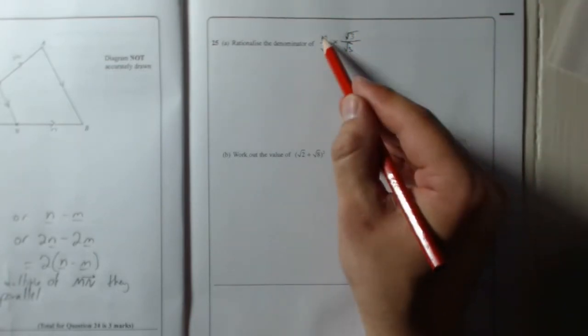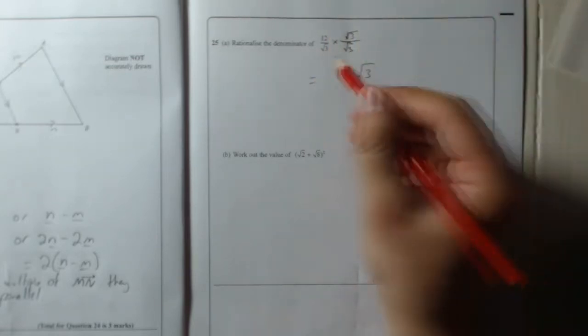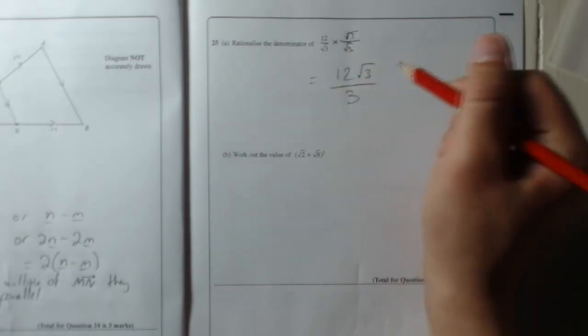So what that gives you is 12 times root 3 is just 12 root 3, and root 3 times root 3 is just 3. So that's it: 12 root 3 over 3.